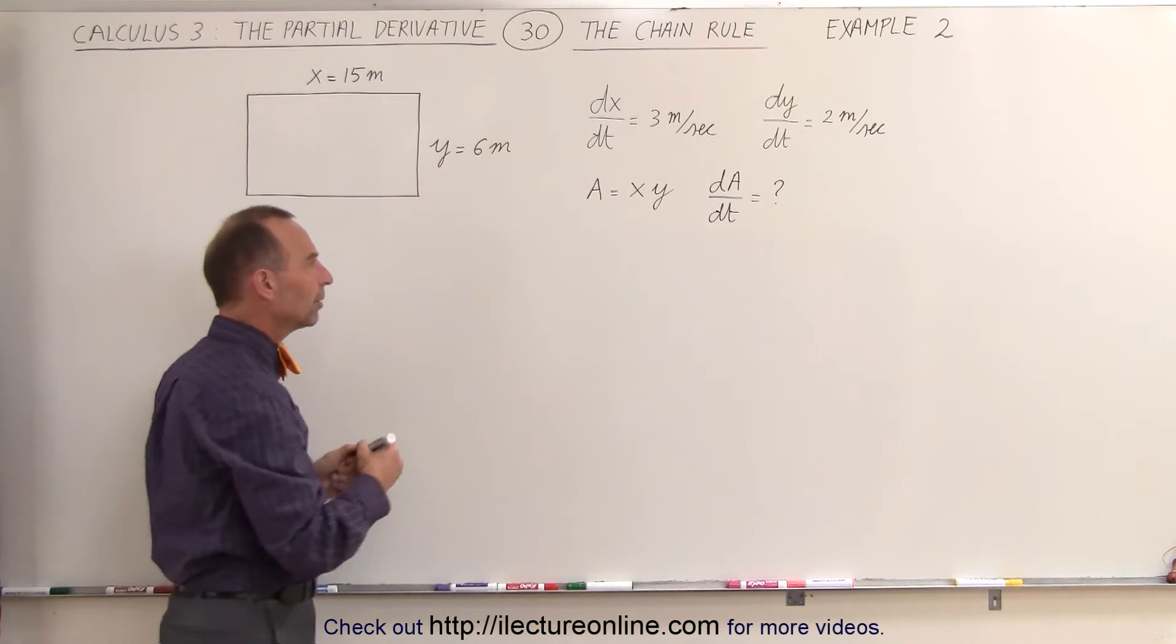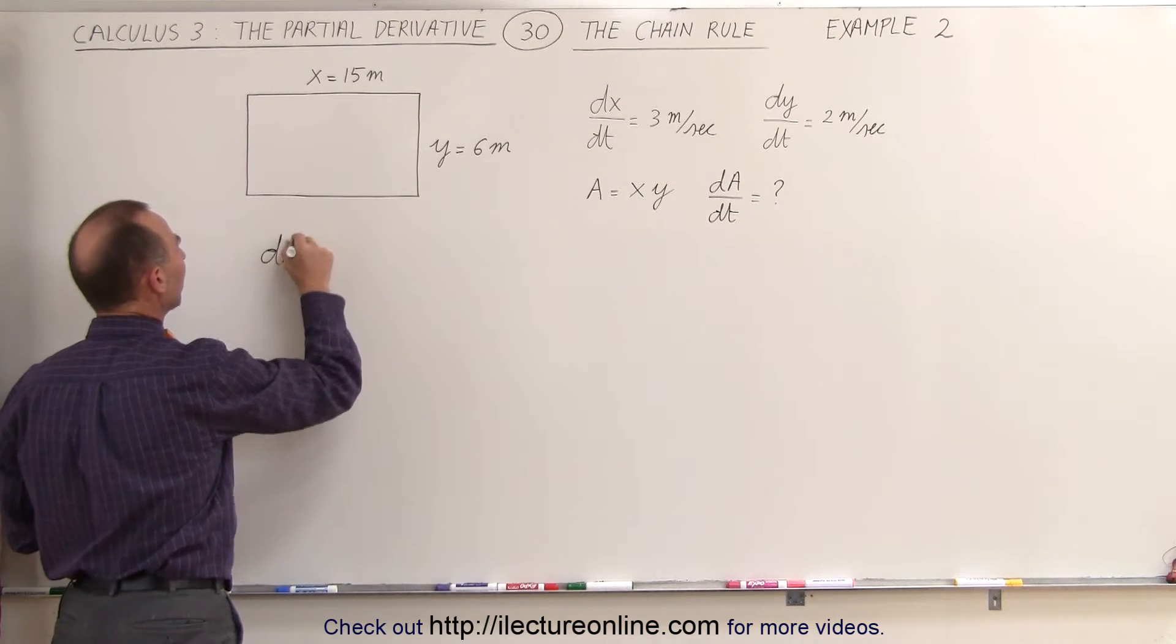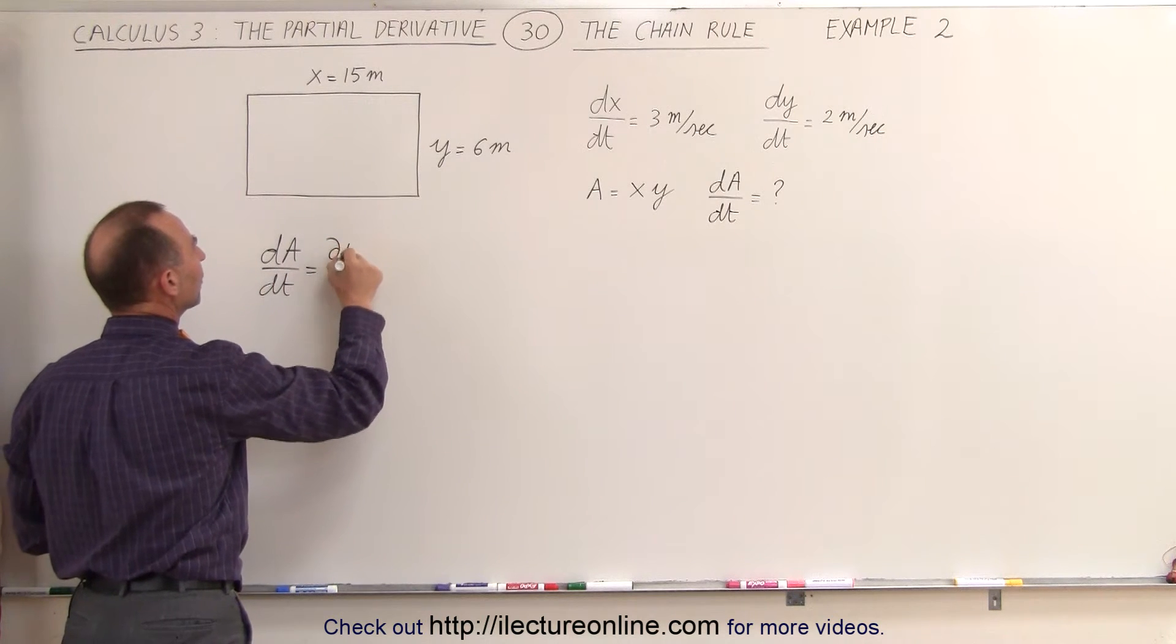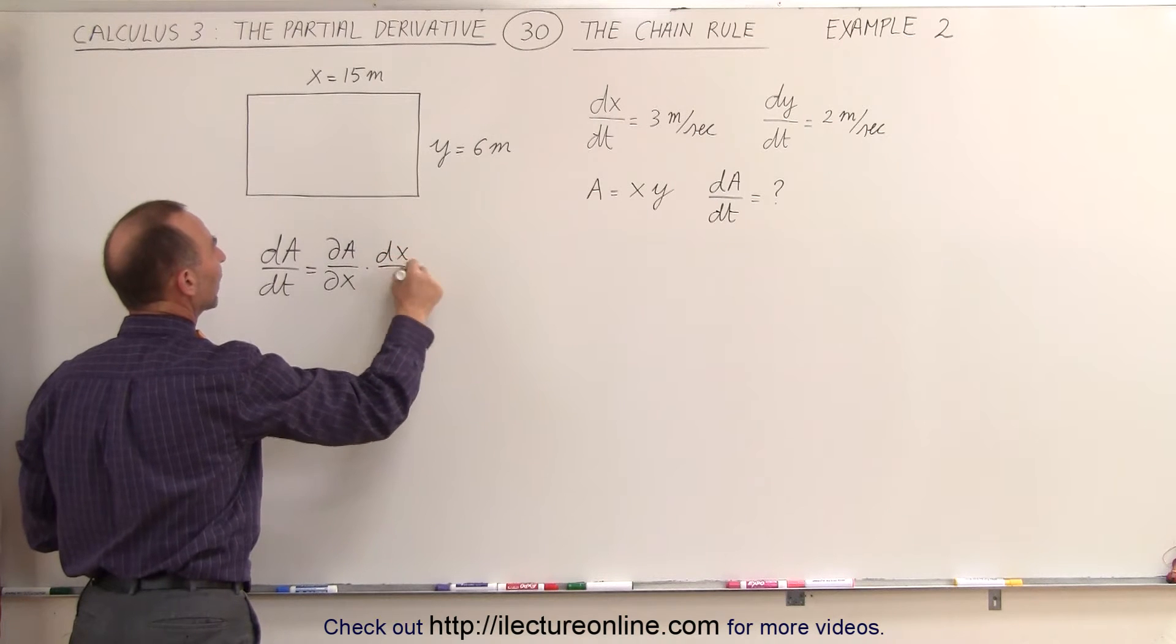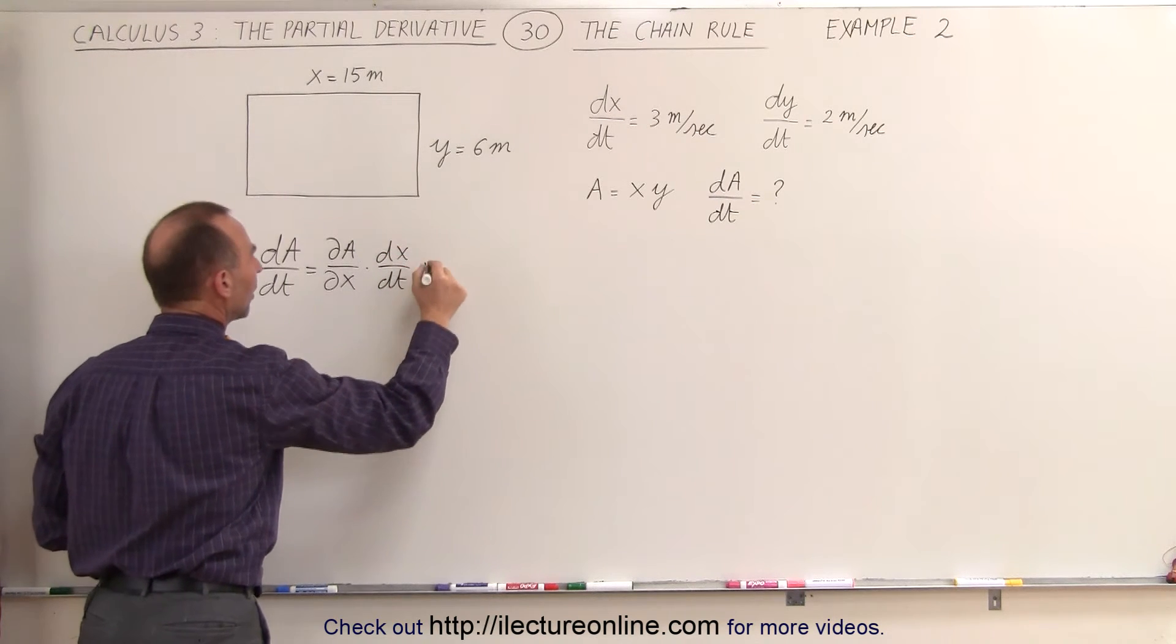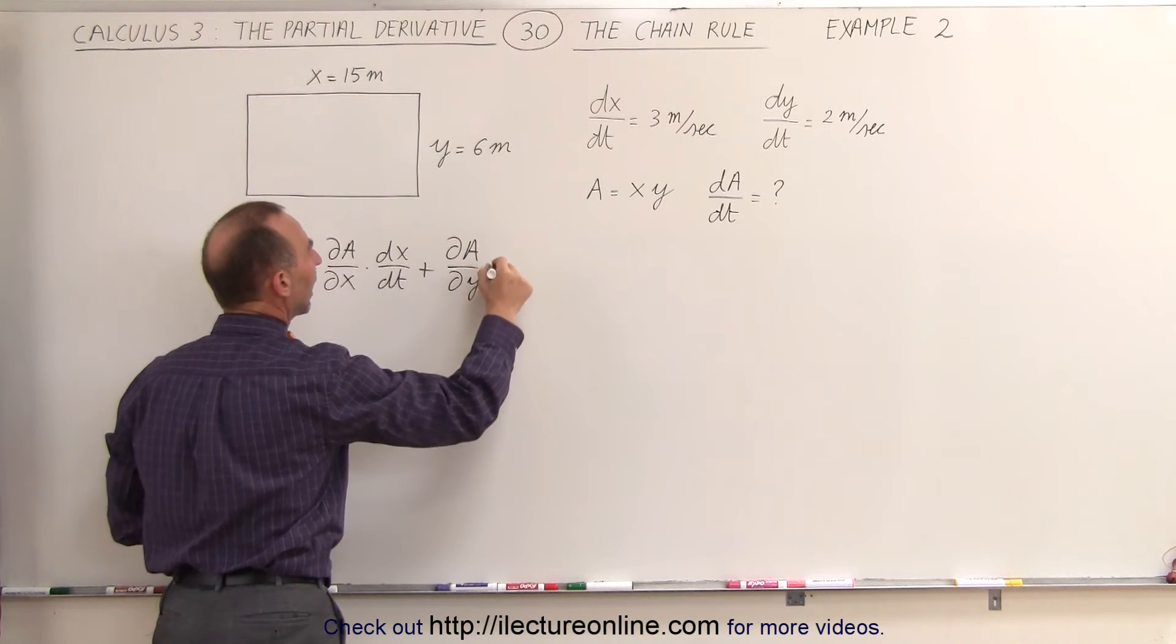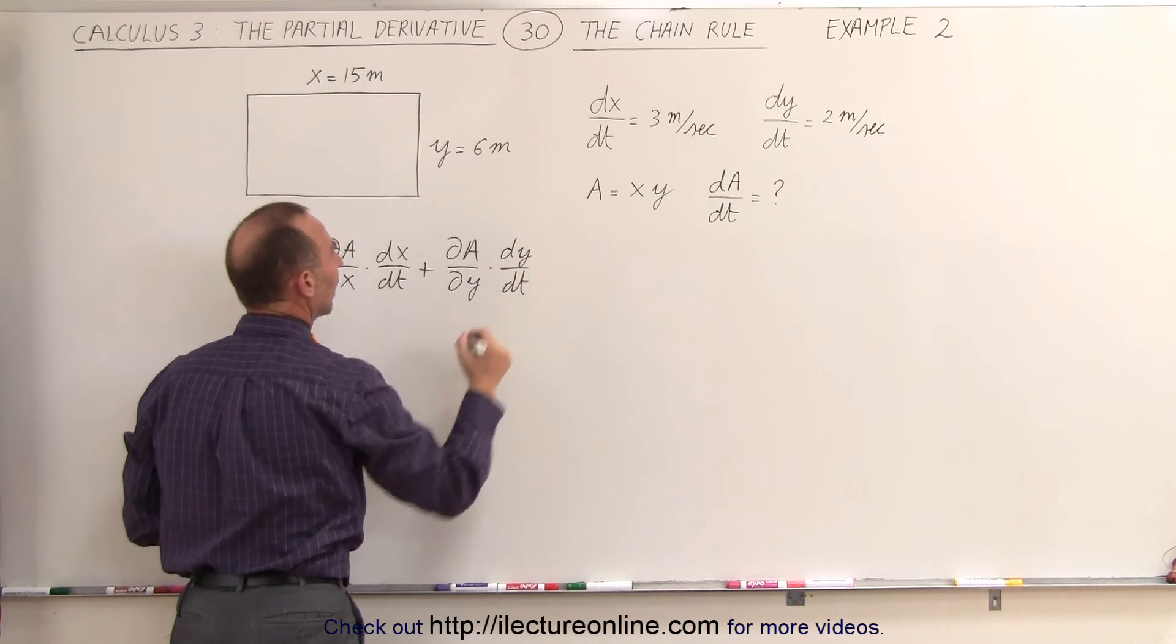Now what is the equation for that? The equation is as follows. The derivative of a with respect to time is equal to the partial derivative of a with respect to x times the derivative of x with respect to time plus the partial derivative of a with respect to y times the derivative of y with respect to time.